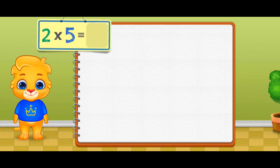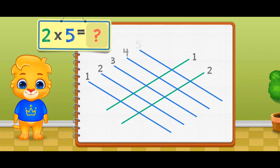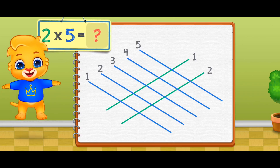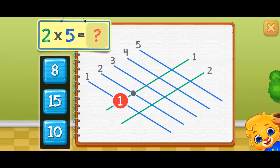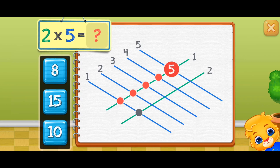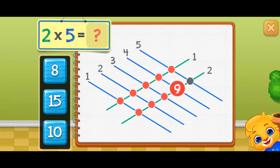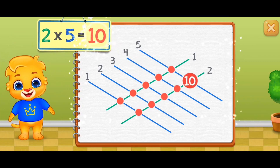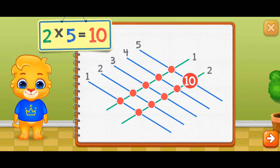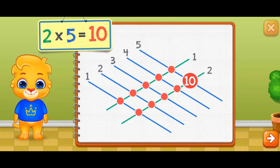Two times five equals — one, two, three, four, five, six, seven, eight, nine, ten. Two times five equals ten.